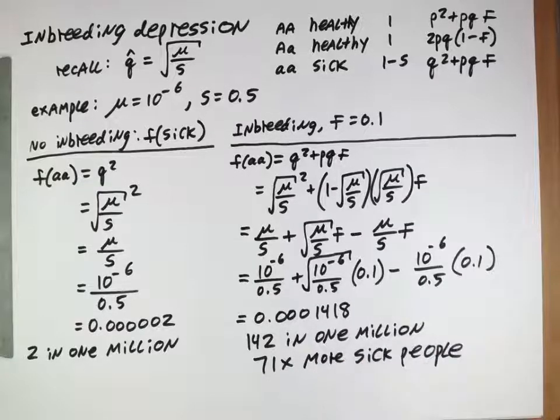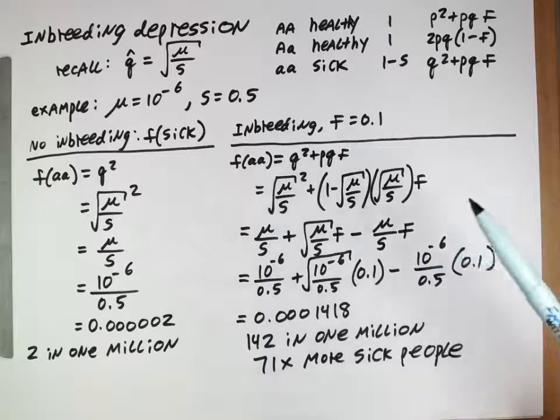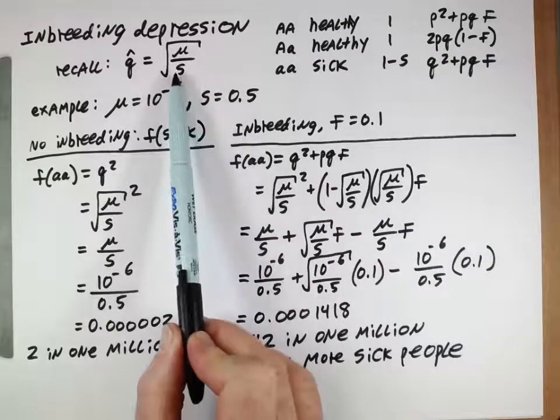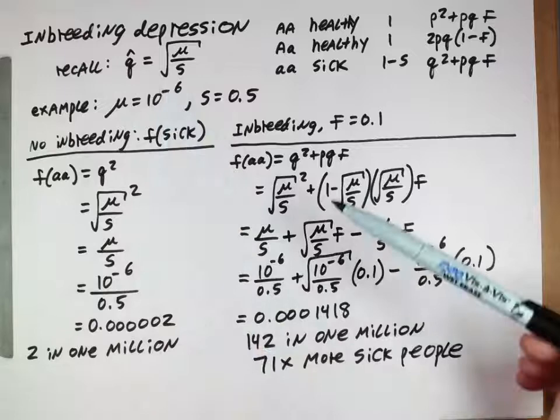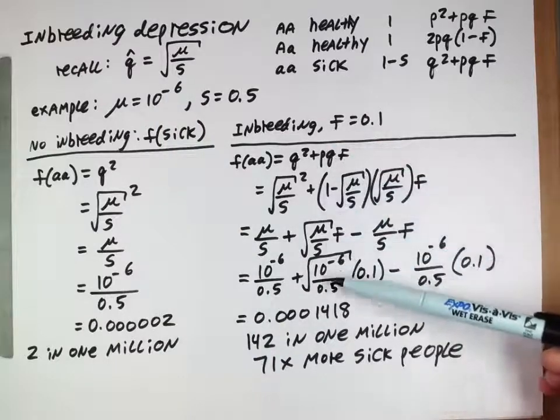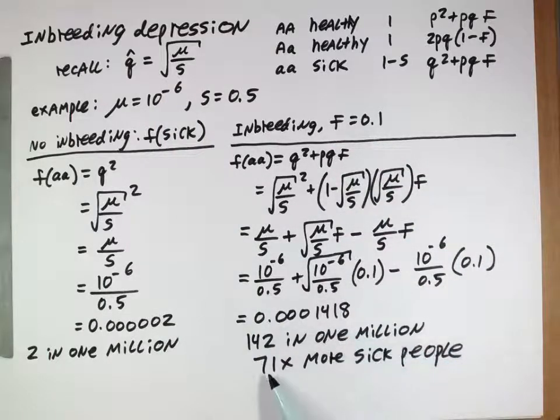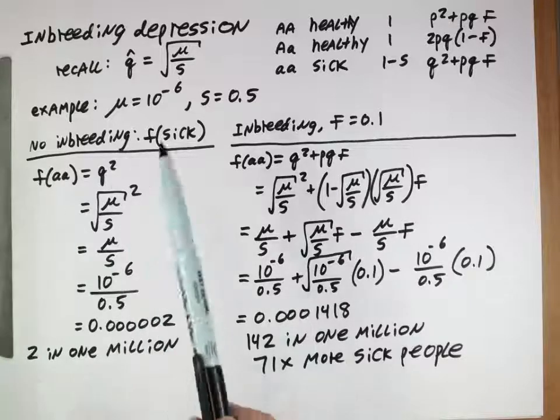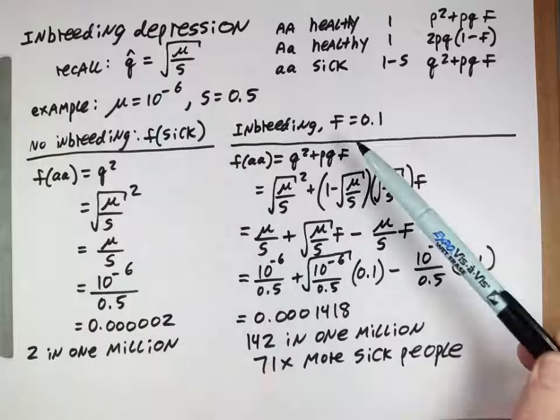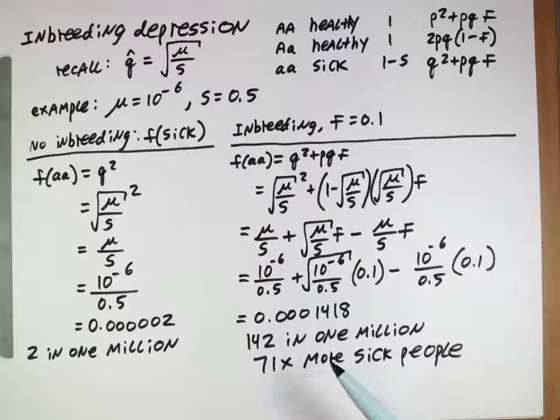The allele frequency is exactly the same, it's given by this, but in a population with just some inbreeding we actually see 71 times more individuals that are manifesting this genetic disorder. Inbreeding again is not changing the allele frequency but is making those alleles apparent a lot more often.